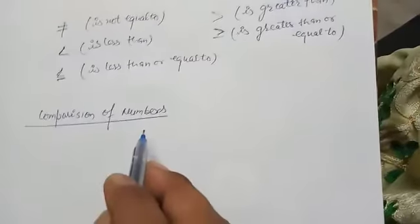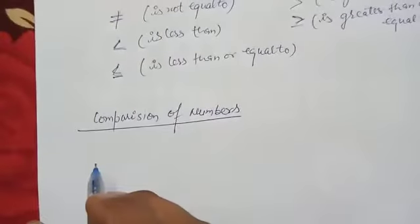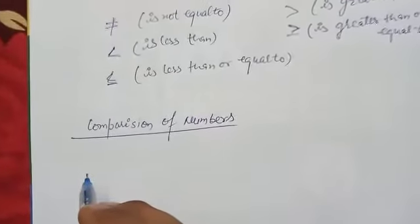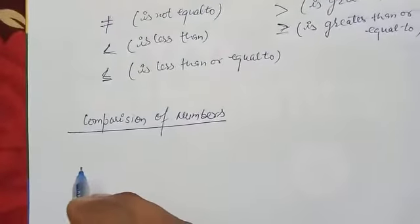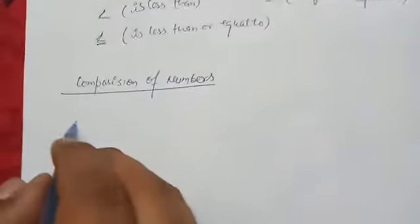Next, comparison of numbers. How do we compare numbers? There are two types. First, if the number of digits in both numbers are the same. For example, consider these numbers.